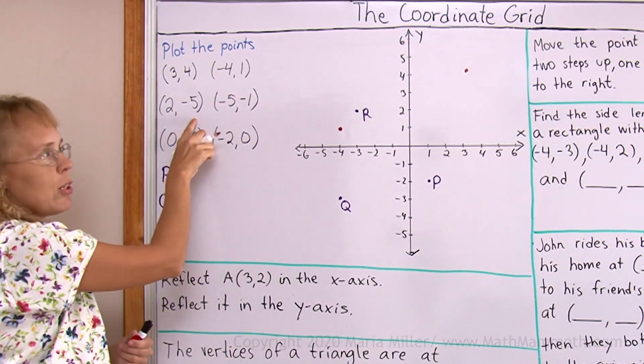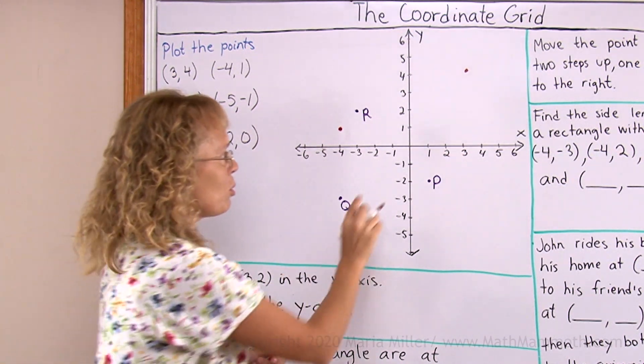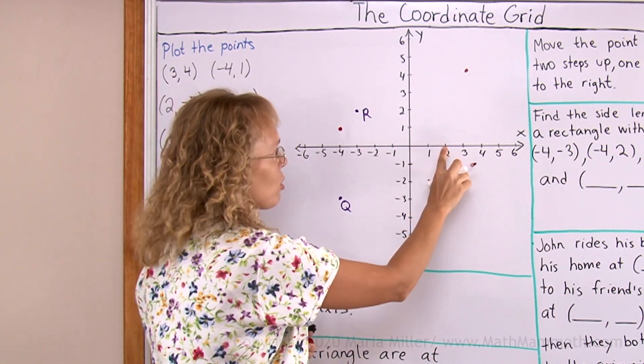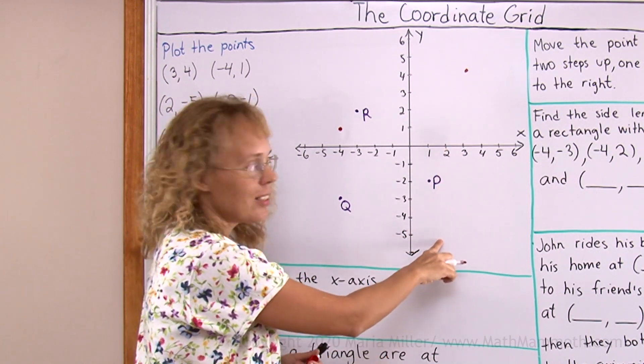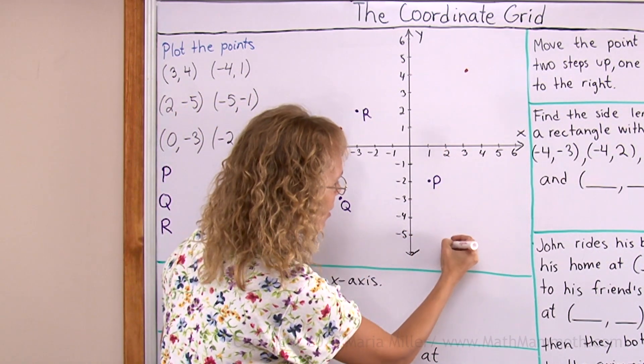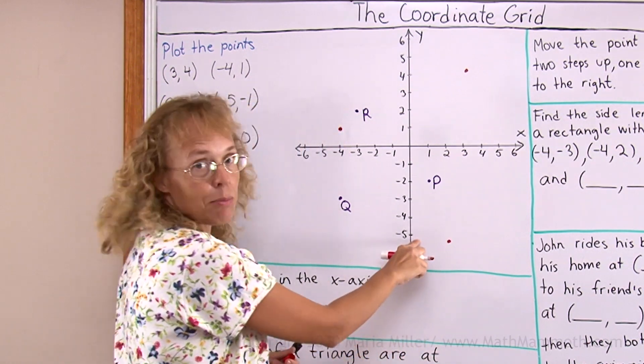This one, (2,-5). First I go to 2 on the x-axis. Then -5 means I go down over here so that it will match with the y-axis minus 5.